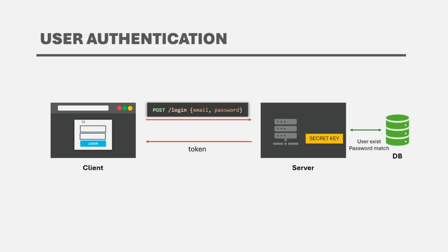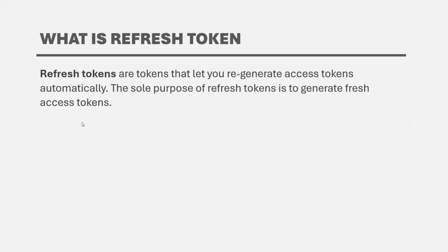What we might want to do is: if the user is active and his JWT is going to expire in a few minutes, we can write logic to re-authenticate the user automatically without them having to login again using the login window. This can be done with the help of a refresh token. Refresh tokens are tokens that let you generate access tokens automatically. Remember that refresh tokens are not a replacement for access tokens, but they can be used to generate access tokens automatically without the user having to re-login.